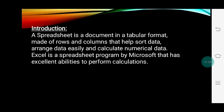An Excel document is known as a workbook, and a workbook contains worksheets. Worksheets are used to store the data. The data is stored in a cell. A cell is the intersection of a row and a column.